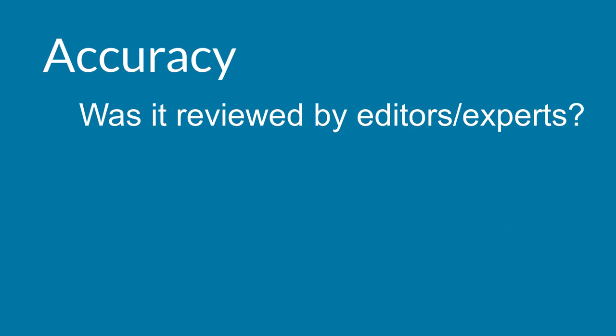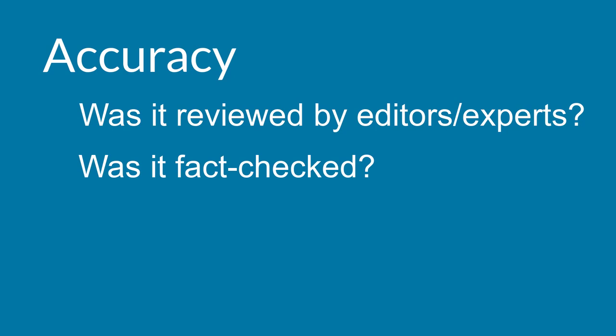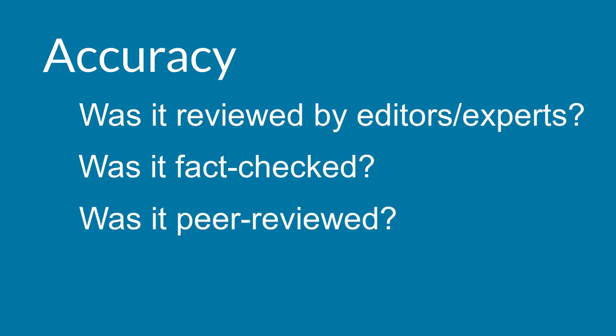For accuracy, ask whether the information was reviewed by editors or subject experts before it was published, and was it fact-checked? If your source is a scholarly journal article, you want it to be peer-reviewed, meaning that other experts in the field have reviewed the article for accuracy. You can Google the publisher or go to their website to learn about their editing process. When you present inaccurate information, you undermine your own credibility.